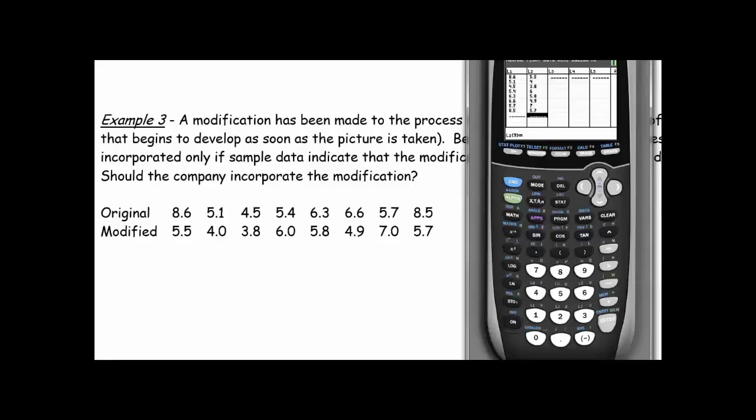Okay, so now that I've got the numbers in, let's just take a second and have this conversation about whether this is a matched pairs test or an independent two sample test. Let's kind of think about what these numbers represent. So they've taken a picture on a piece of film and they used the original process to develop the film or create the film and they use this modified chemical process that it starts working on developing after the picture is taken.